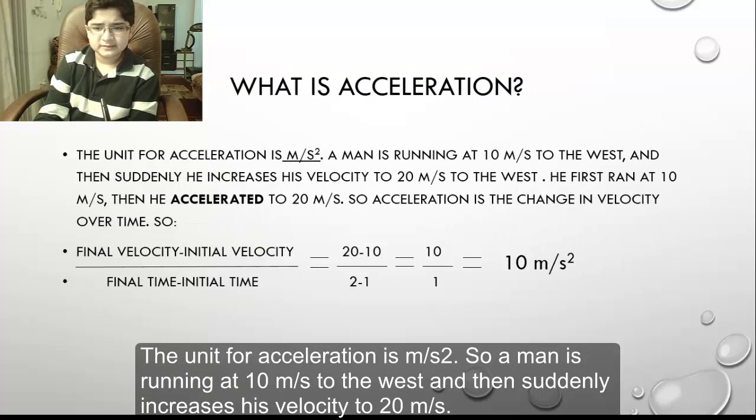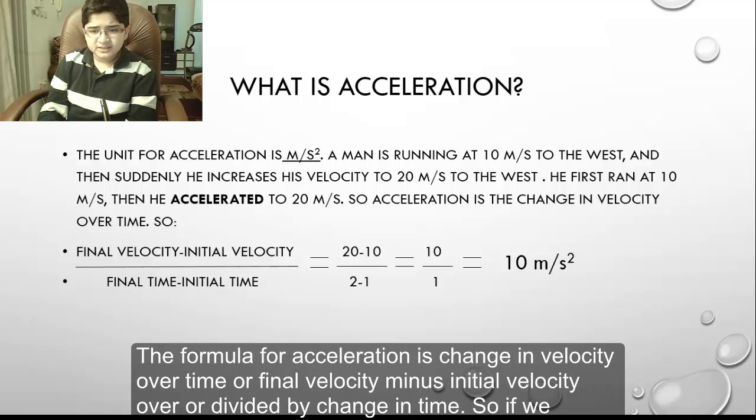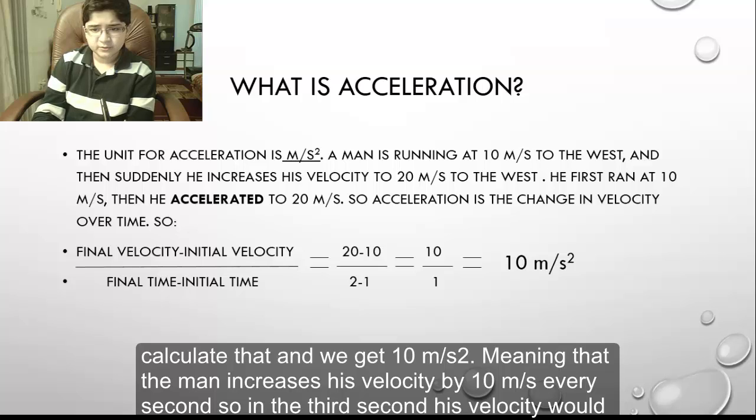The unit for acceleration is meters per second squared. So a man is running at 10 meters per second to the west and then suddenly increases his velocity to 20 meters per second. The formula for acceleration is change in velocity over time or final velocity minus initial velocity divided by change in time. So if we calculate that we get 10 meters per second squared, meaning that the man increases his velocity by 10 meters per second every second. So in the third second his velocity would be 30 meters per second.